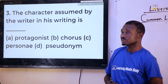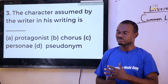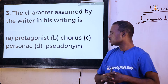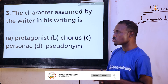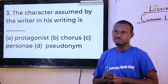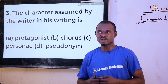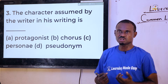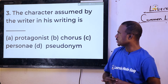Question three: 'The character assumed by the director in his writing is dash.' Options are protagonist, chorus, personality, and pseudonym. It is not protagonist, not chorus, not personality — the answer is pseudonym. It is not a real character but one created by the writer just to be a part of the story.